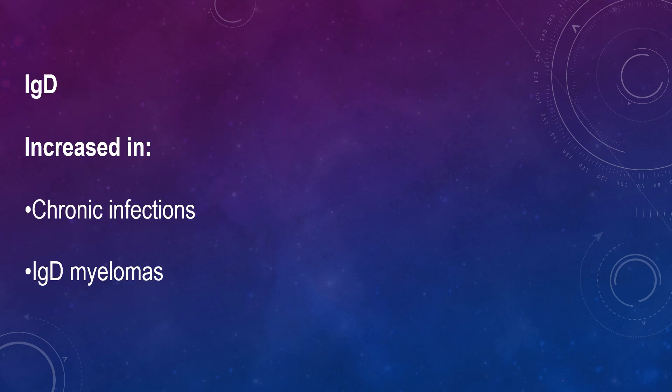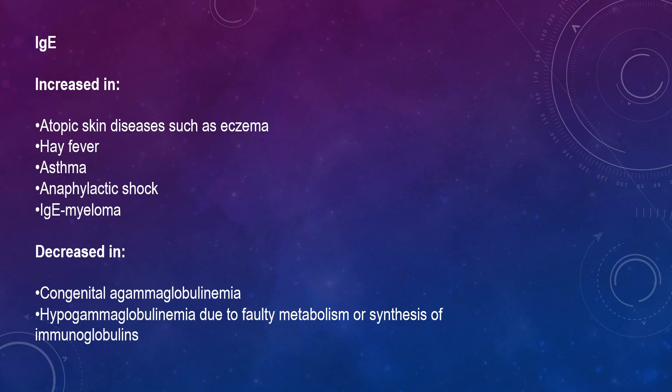IgD is increased in chronic infections and IgD myelomas. Finally, IgE is increased in atopic skin diseases such as eczema, hay fever, asthma, anaphylactic shock, and IgE myeloma. IgE is decreased in congenital agammaglobulinemia and hypogammaglobulinemia due to faulty metabolism or loss of immunoglobulins.